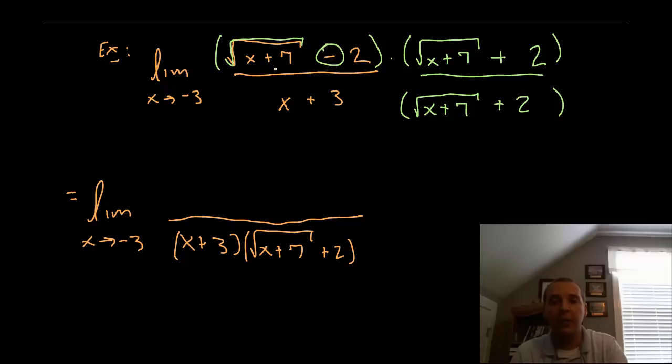Take the first, outer, inner, last terms, foil. The first terms would be square root of x plus 7 times square root of x plus 7, which makes square root of x plus 7 quantity squared. And that will make the radical and the square go away. We get just x plus 7.